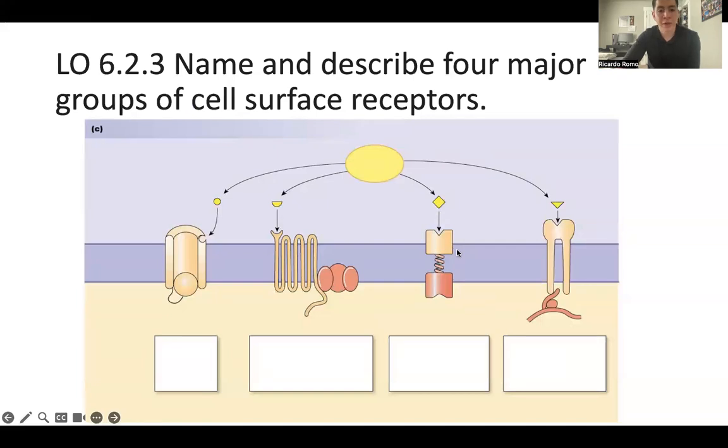Third one that we're going to have is our receptor enzyme, which is this one. And ligand binding to our receptor enzyme is going to activate an intracellular enzyme. And then we have our last one, which is going to be the integrin. And ligand binding to our integrin is going to alter enzymes or the cytoskeleton.